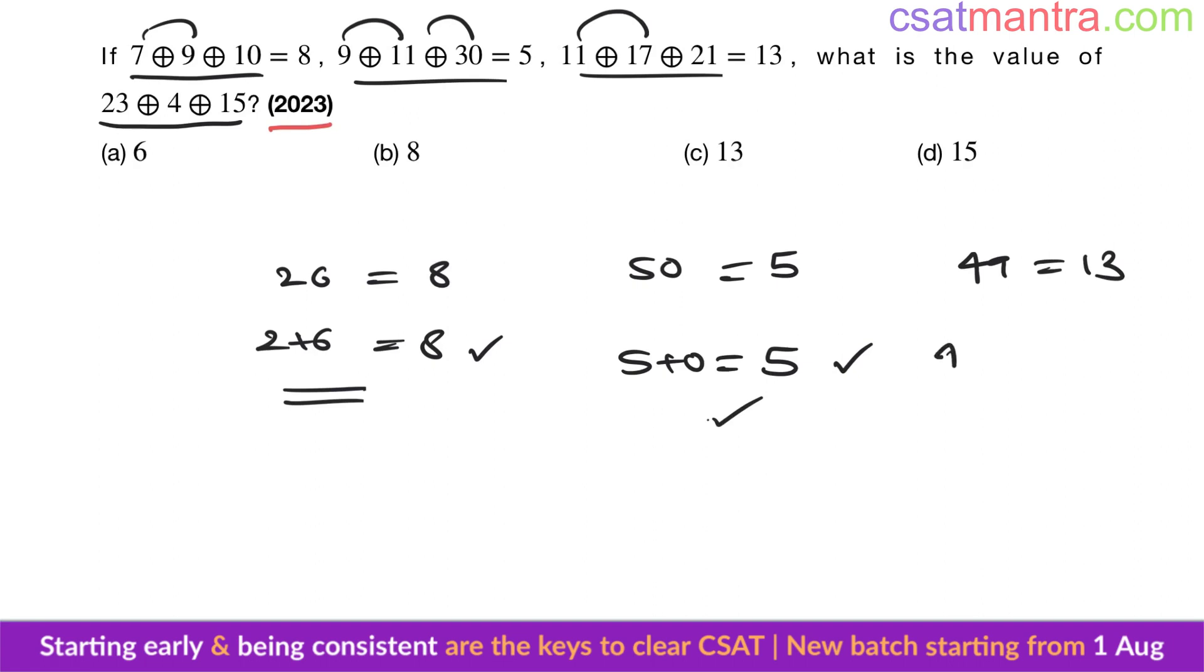Now 23 plus 4 is 27, 27 plus 15 is 42. 42, this should be 4 plus 2, that is equal to 6, answer a. If the addition doesn't give us the answer, a proper relationship, then we'll be moving on to subtraction, multiplication, division, or combination of any of these operations.